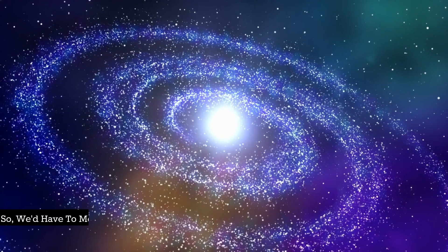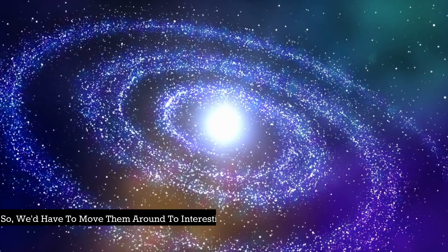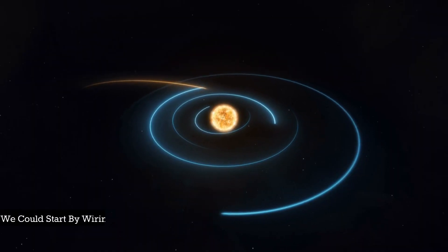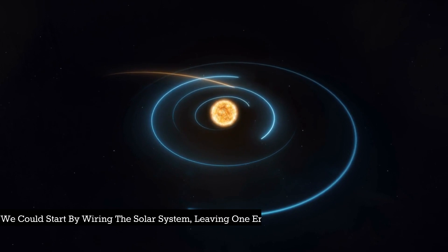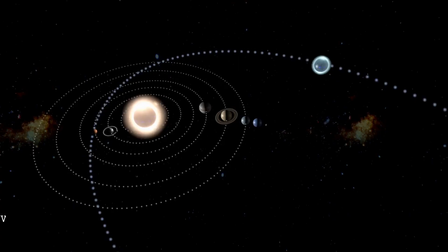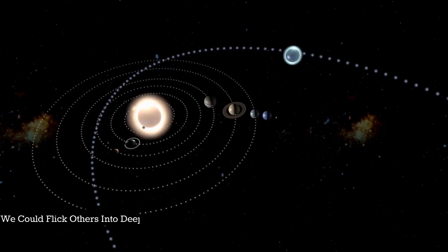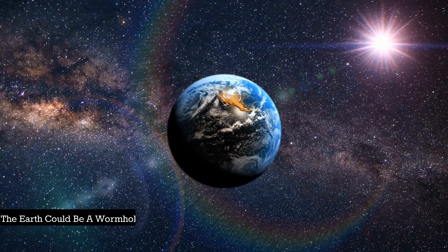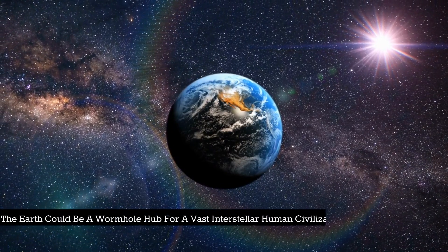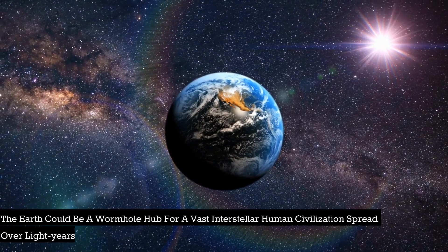Once we're keeping them open, the ends would start together, so we'd have to move them around to interesting places. We could start by wiring the solar system, leaving one end of each wormhole in orbit around the Earth. We could flick others into deep space. The Earth could be a wormhole hub for a vast interstellar human civilization spread over light years but only a wormhole away.